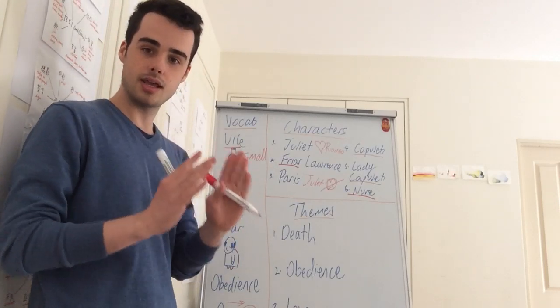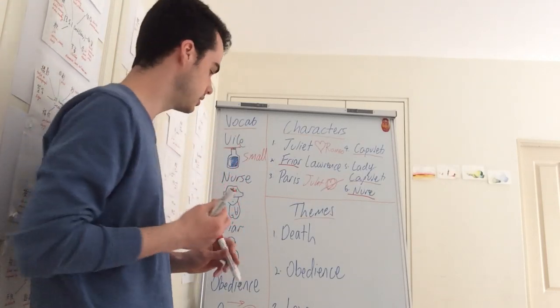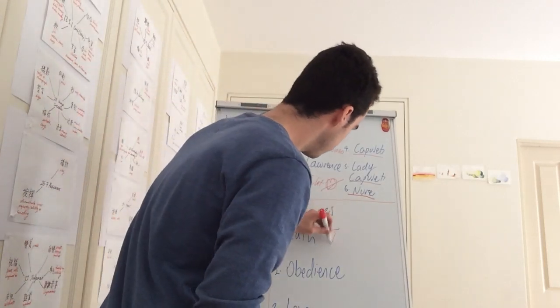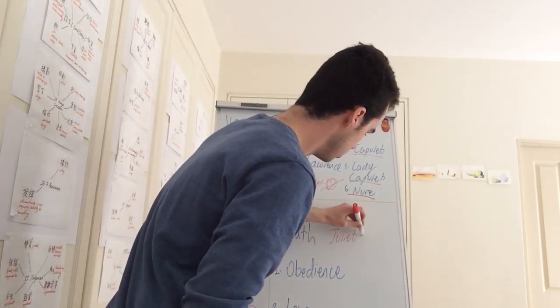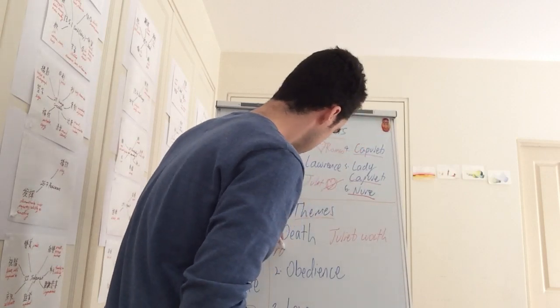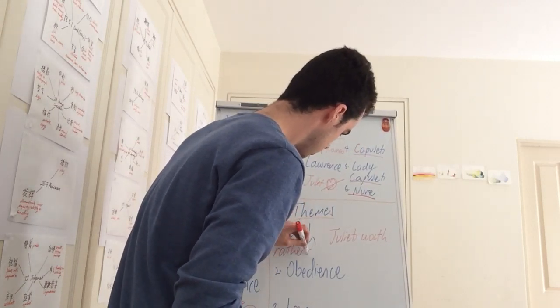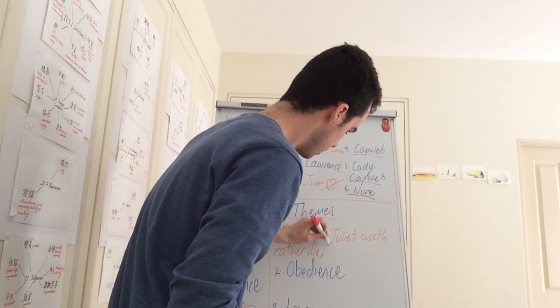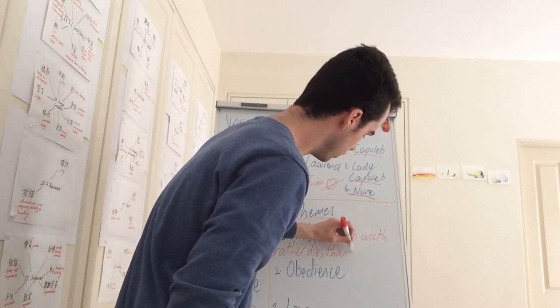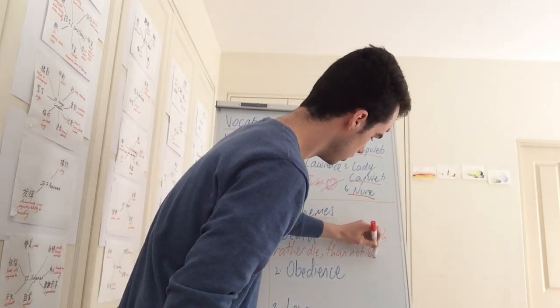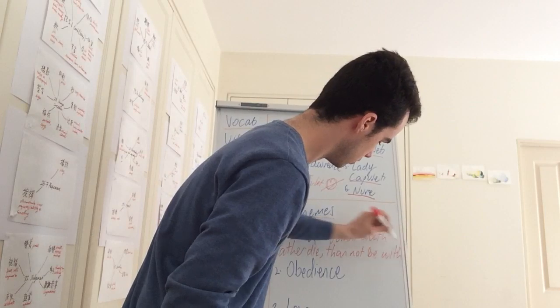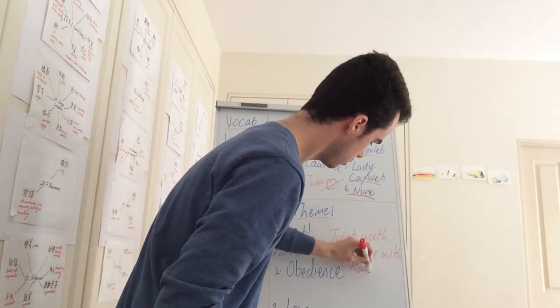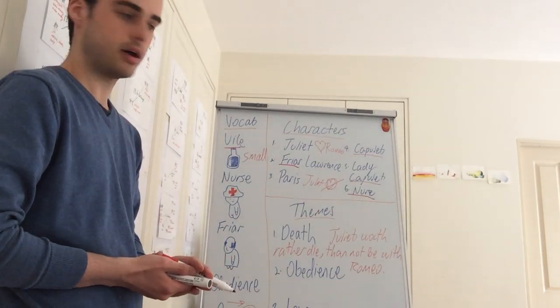But the important idea is Juliet would rather die than not be with Romeo. Juliet would rather die than not be with Romeo. Very important part.